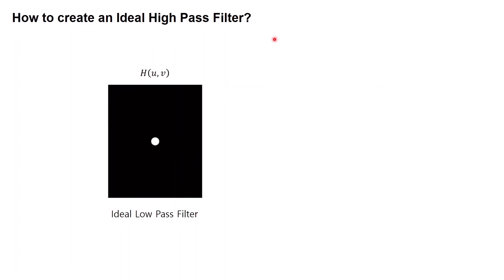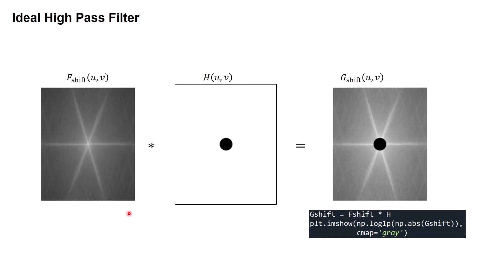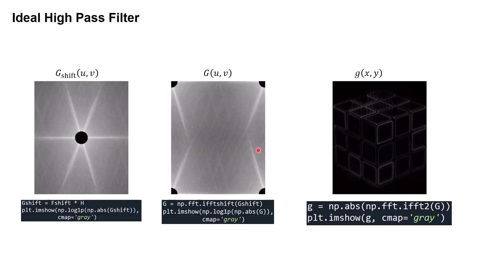How do we create an ideal high-pass filter? This is our ideal low-pass filter. As seen on the previous slide, this filter passes the low frequency around the center and filters out the higher frequency. An ideal high-pass filter does the opposite — it removes the low frequency around the center and passes the higher frequency. We can simply create the ideal high-pass filter by computing 1 minus the ideal low-pass filter. So if H is our ideal low-pass filter, then 1 minus 0 equals 1, and 1 minus 1 equals 0. We then repeat the same process: multiply our frequency domain image with the high-pass filter and take the inverse Fourier transform to get our filtered image.